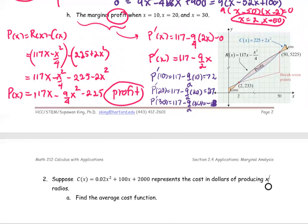From the graph, we can see the cost function and revenue function meet at x = 2 and x = 50. The cost and revenue are both equal to 233 at x = 2, and both equal to 5,225 at x = 50. Between x = 2 and x = 50, revenue is greater than cost, so profit is positive. Below x = 2 or above x = 50, you operate at a loss.